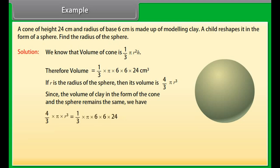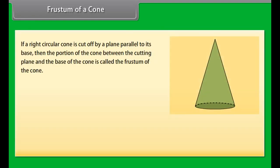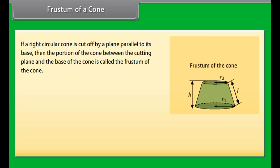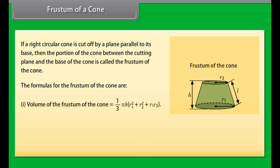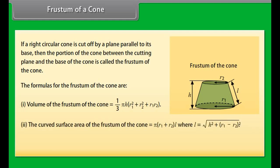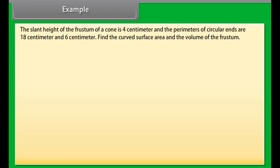Example: A cone of height 24 cm and base radius 6 cm is made of modeling clay. A child reshapes it into a sphere. Find the radius of the sphere. Volume of cone = (1/3)πr²h = (1/3) × π × 6 × 6 × 24 cm³. If r is the radius of the sphere, its volume = (4/3)πr³. Since the volume is preserved, solving gives r = 3 × 2 = 6 cm. Therefore, the radius of the sphere is 6 cm.